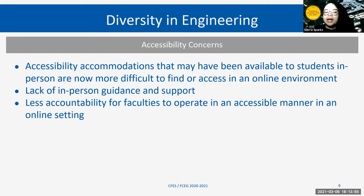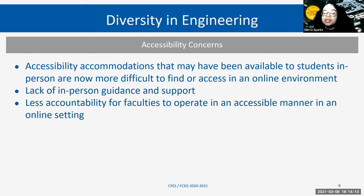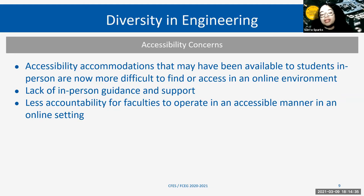The pandemic itself also presented accessibility concerns. Learning accommodations that may have been available to students in person are often more difficult to find or access in an online environment. Students don't necessarily have a direct line of contact with their professors and supervisors when on work terms. There's a lack of in-person guidance and support, and less accountability for faculties to operate in an accessible manner in an online setting.